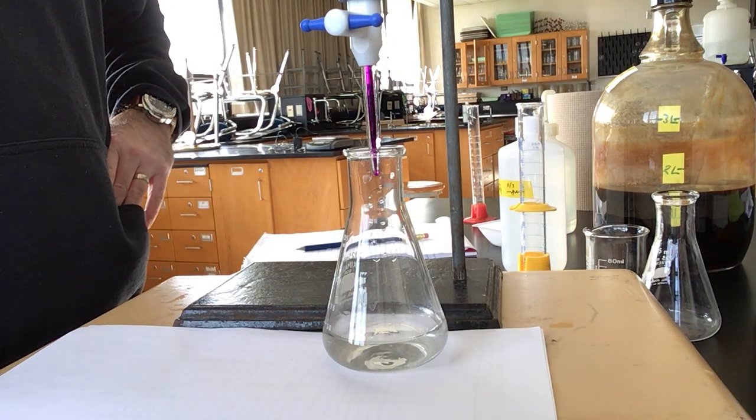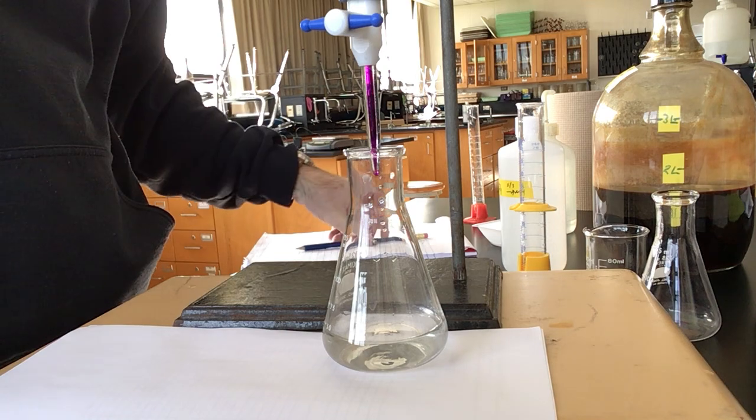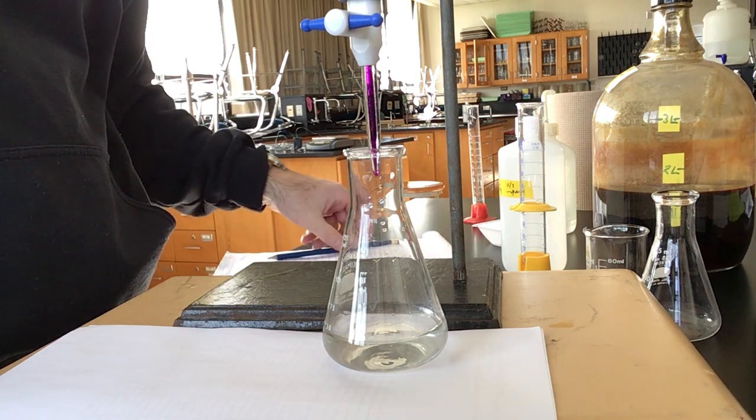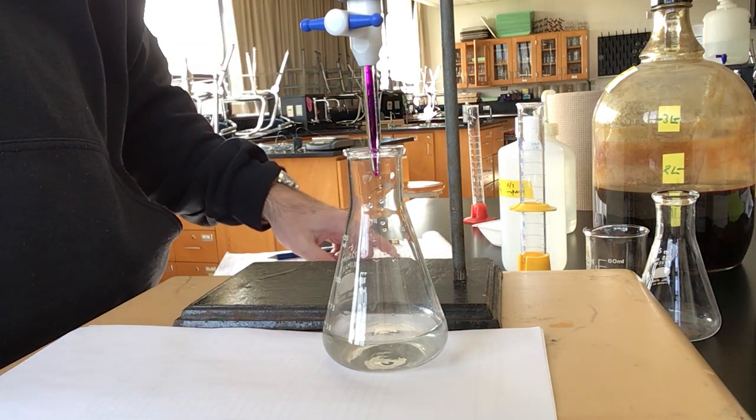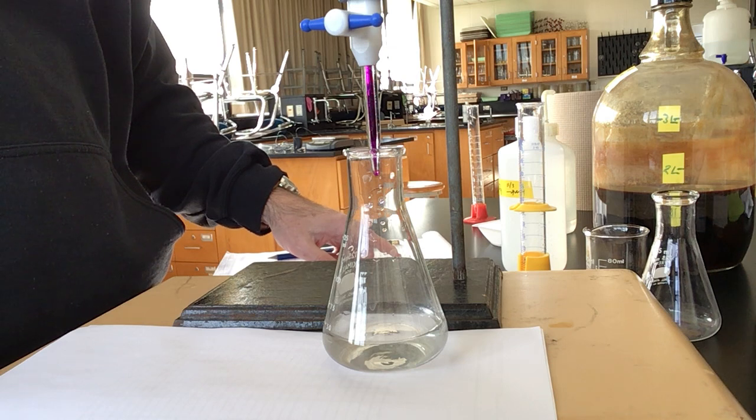Alright everybody, so I've got everything positioned. I took my initial volume of my titrant, the potassium permanganate solution, as 25.30.